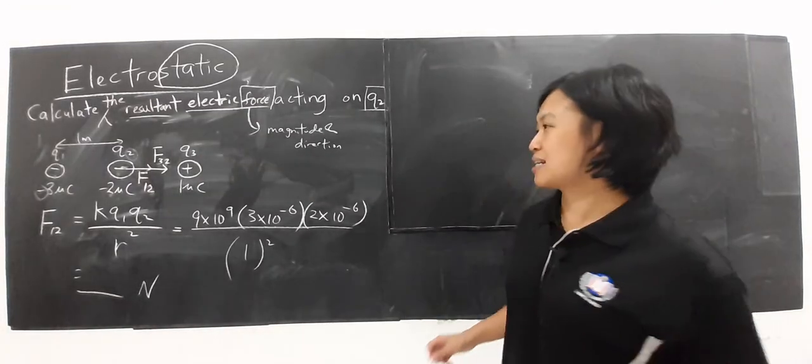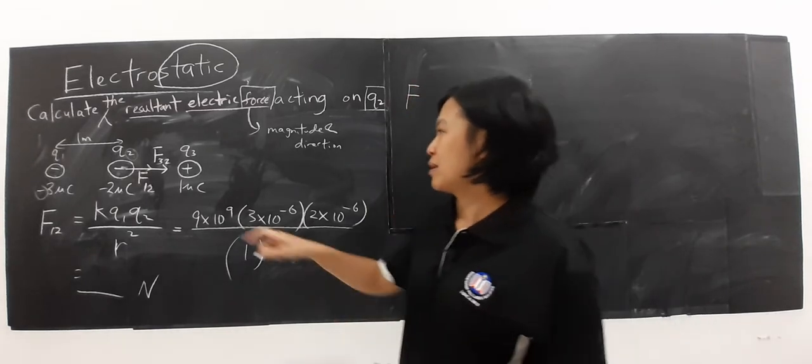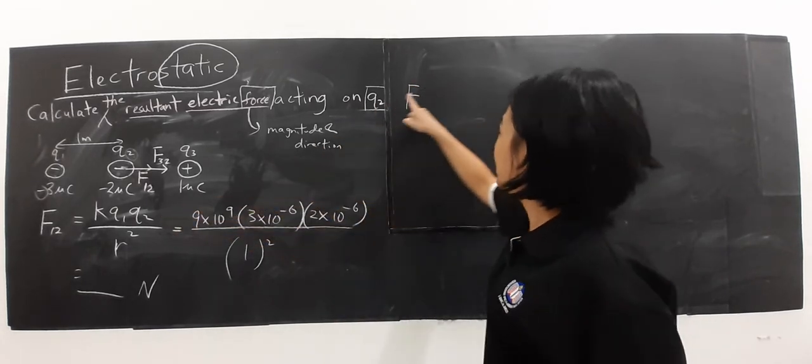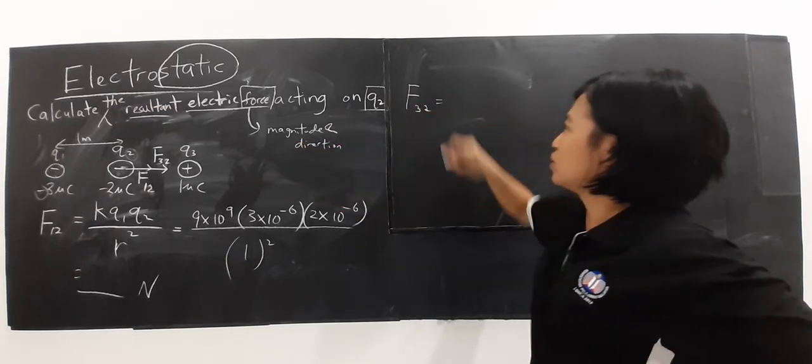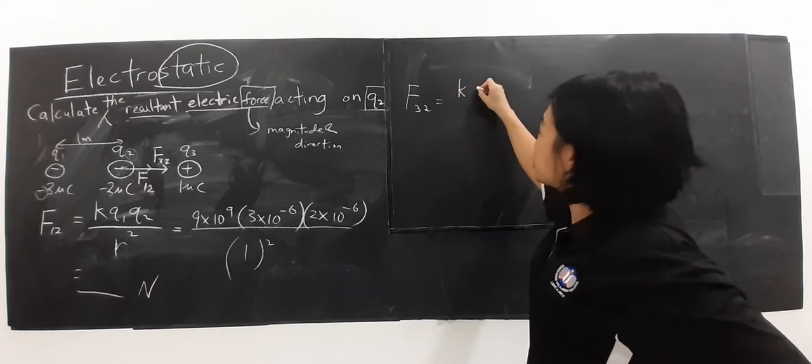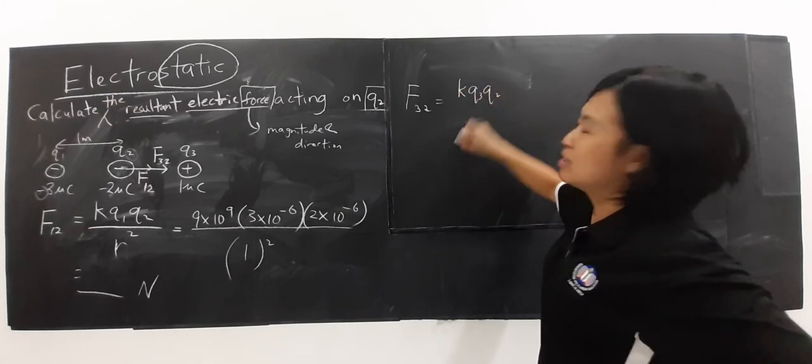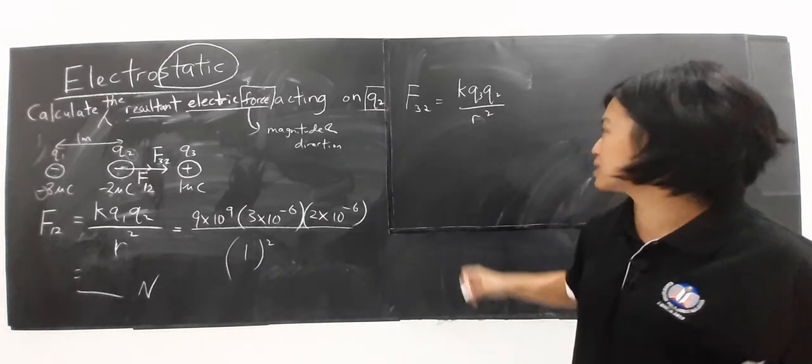And how about the next? Next one? Contohnya F3,2. What are we going to do? Sama juga, kira dulu nilainya. So we are going to use the concept of Coulomb's Law just now.